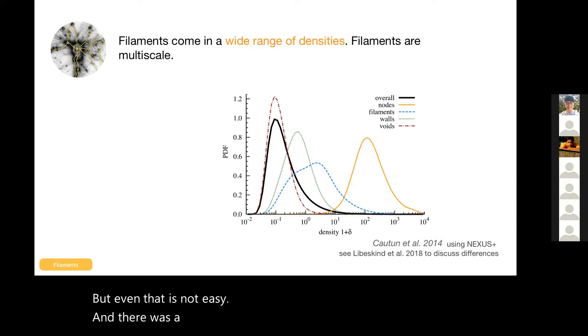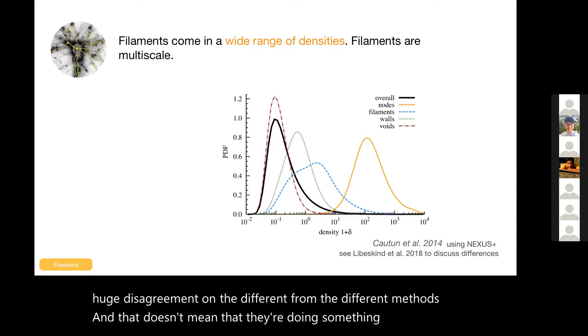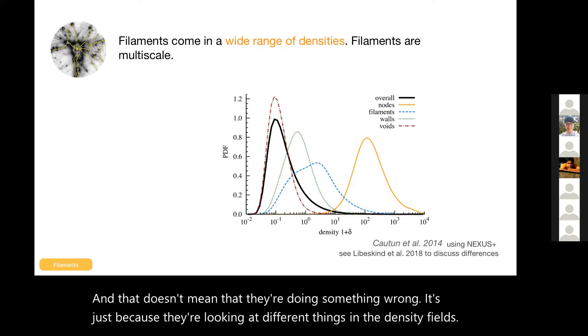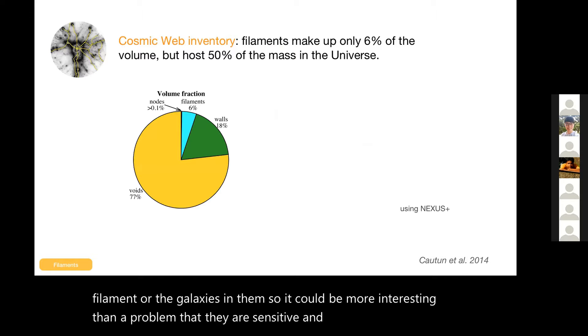But even that is not easy. There was a paper a few years ago by Noam Liebeskind that compared a number of leading filament finders and showed a huge disagreement from the different methods. That doesn't mean they're doing something wrong - it's just because they're looking at different things in the density fields. It's really interesting actually to investigate because that must mean different filament finders pick up different effects of filaments or the galaxies in them. So it could be more interesting than a problem that they're sensitive to different physical effects.